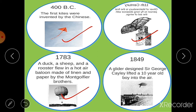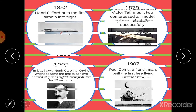In 1849, a glider designed by Sir George Cayley lifted a 10-year-old boy into the air. In 1852, Henri Giffard put the first airship into flight. In 1879, Victor Tatin built two compressed-air model airplanes which flew successfully. In 1903, at Kitty Hawk, North Carolina, Orville Wright became the first to achieve controlled powered flight, lasting about 12 seconds. In 1907, Paul Cornu, a Frenchman, built the first free-flying helicopter.